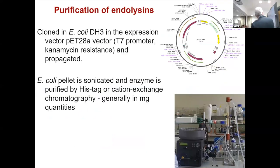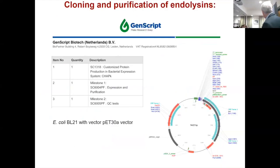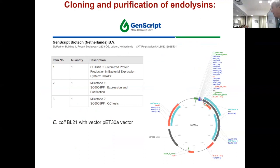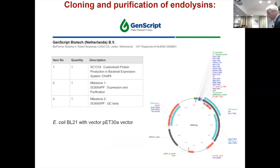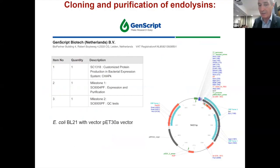We've been purifying these endolysins. Originally we did it ourselves using HISTAG or cation exchange chromatography with various vectors — quite expensive and time consuming. More recently, we've started to use a company in the Netherlands, Genscript. You simply email them the nucleotide sequence of your endolysin, and they send you back the produced endolysin in a microfuge tube along with the E. coli clone. It's far more time efficient and cost effective, using the PET vector system.